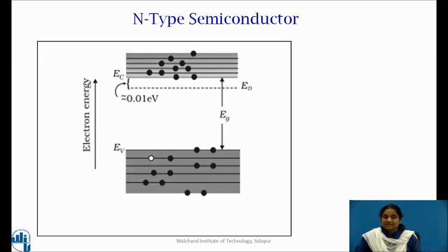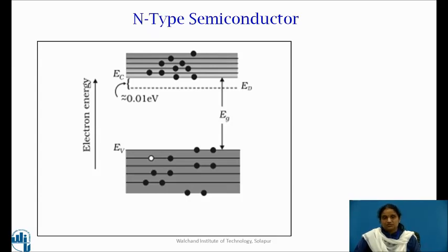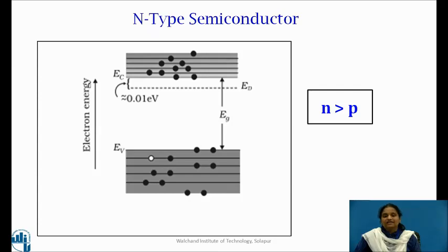In n-type semiconductor, the total number of conduction electrons is due to the electrons contributed by donors and those generated intrinsically, while the total number of holes is only due to holes from the intrinsic source. The rate of recombination of holes would increase the number of electrons. As a result, electrons are the majority carriers and holes are the minority carriers in case of n-type semiconductor.